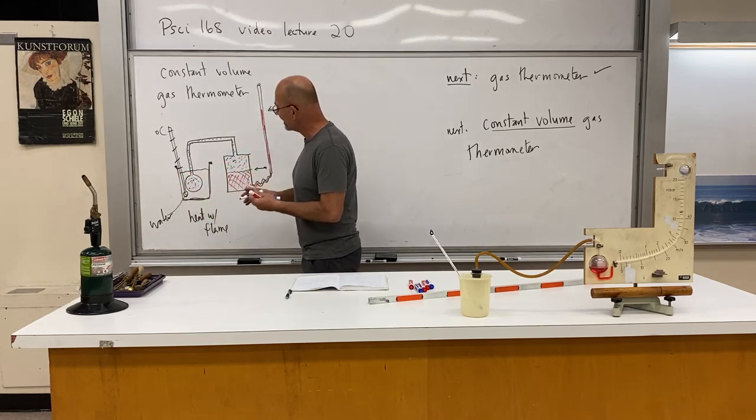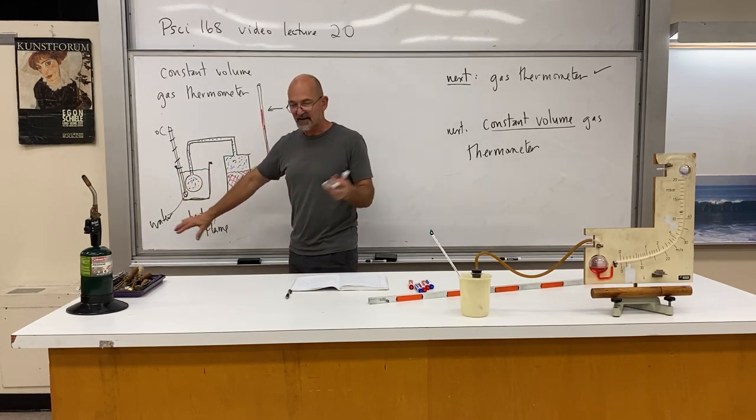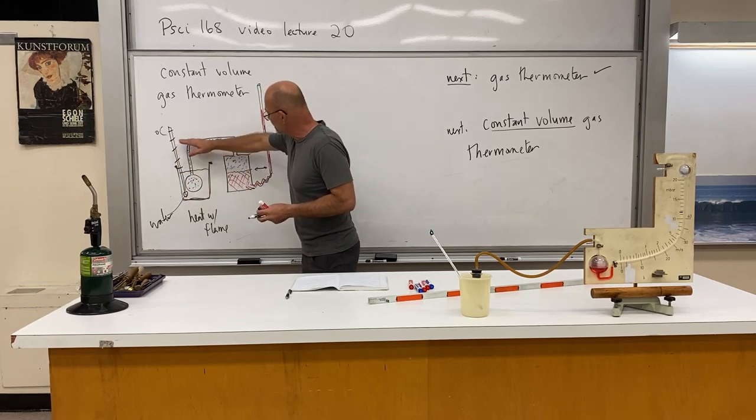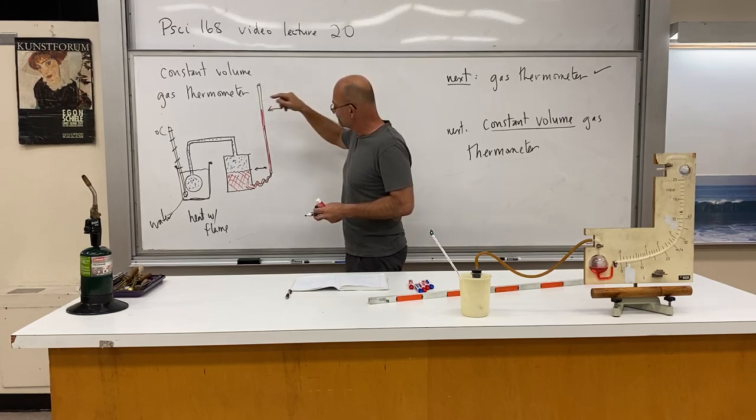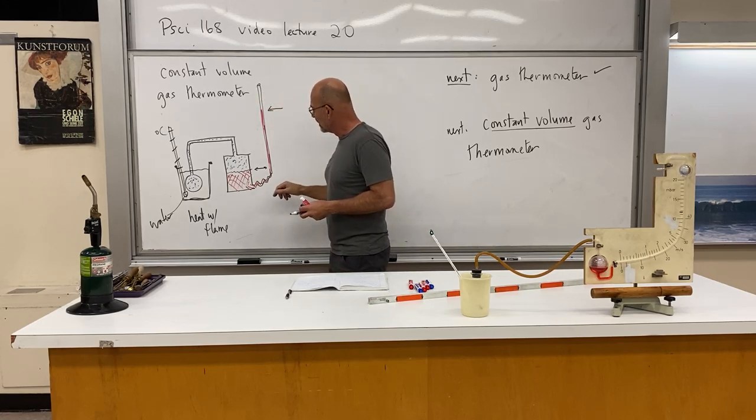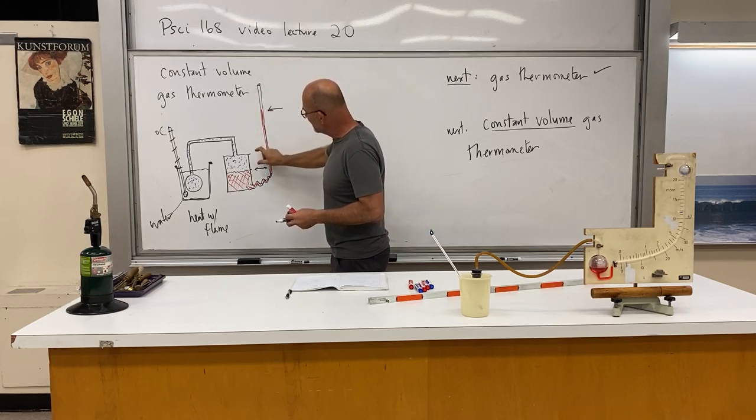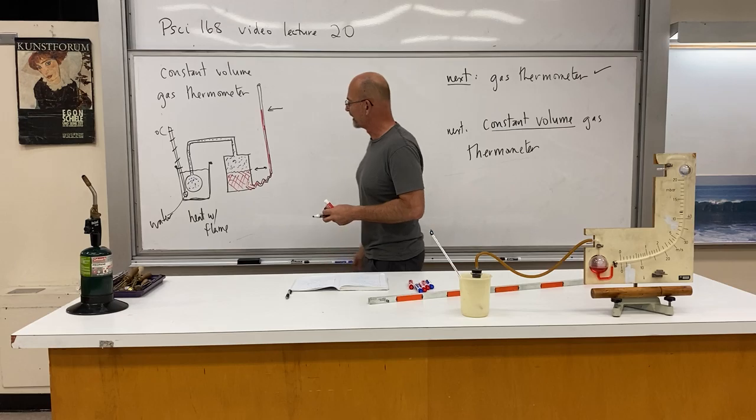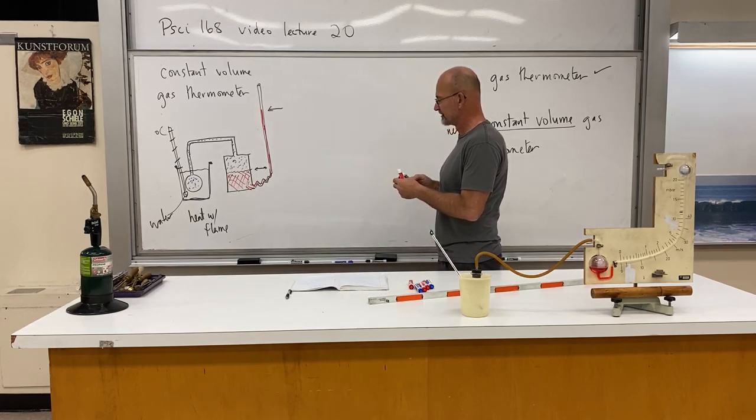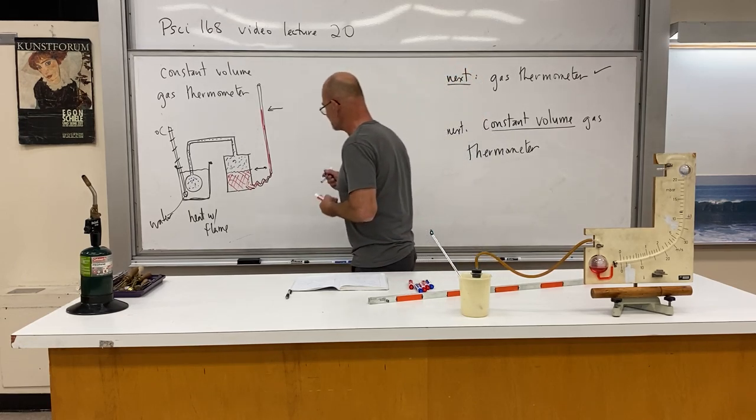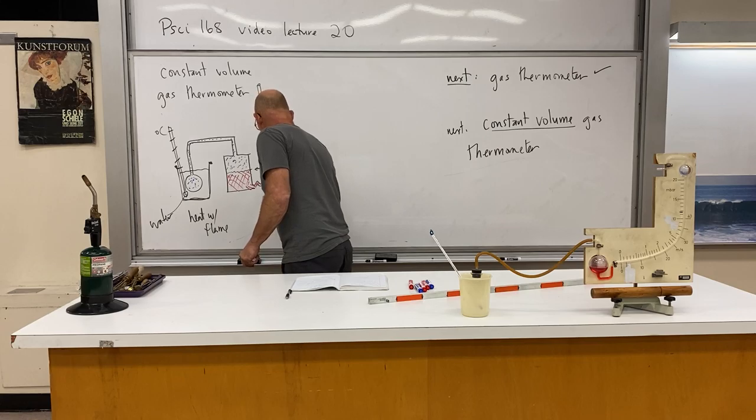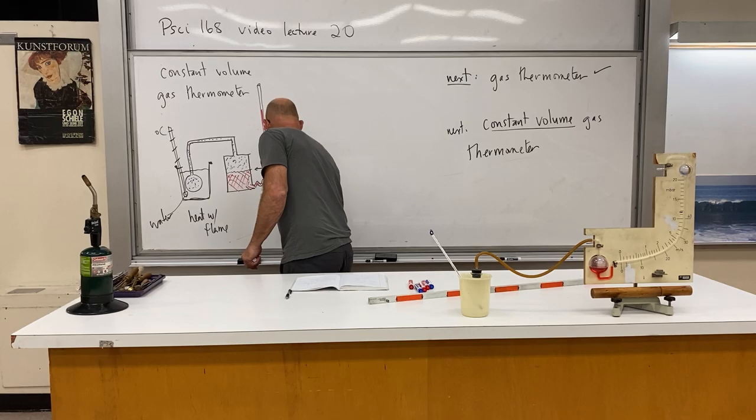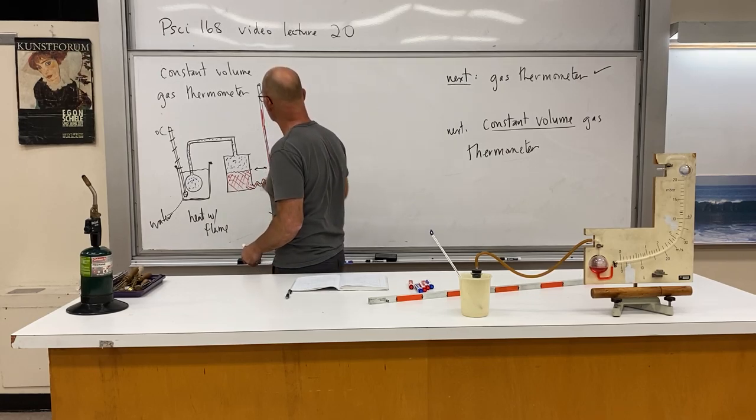But we have in here a thermometer degrees Celsius. So we always know what the temperature is of this water. And as we increase the temperature, just as I did before, we increase the pressure here. This goes over. This pushes down on the red column, brings it up. But we adjust this thing vertically to make sure the volume in here remains the same. The volume of gas. Flexible to adjust. Constant volume.